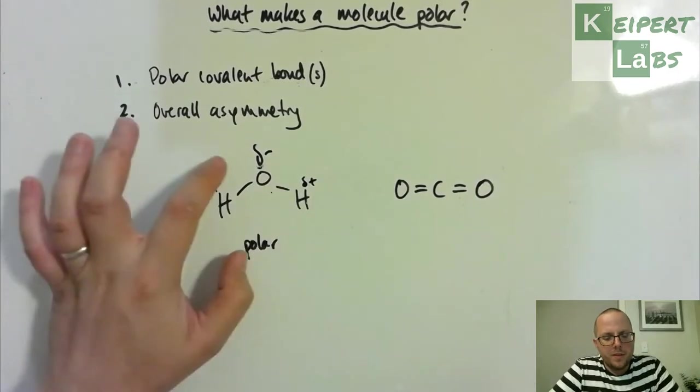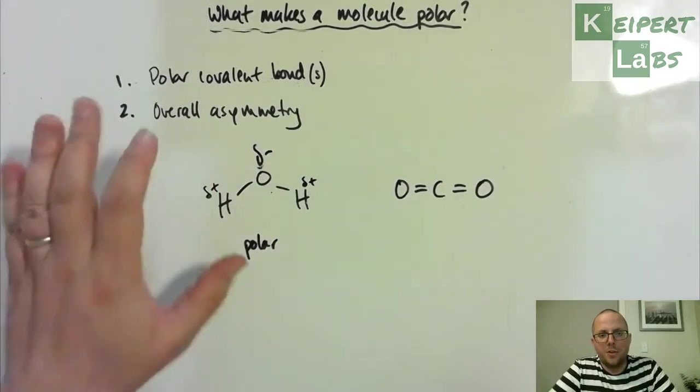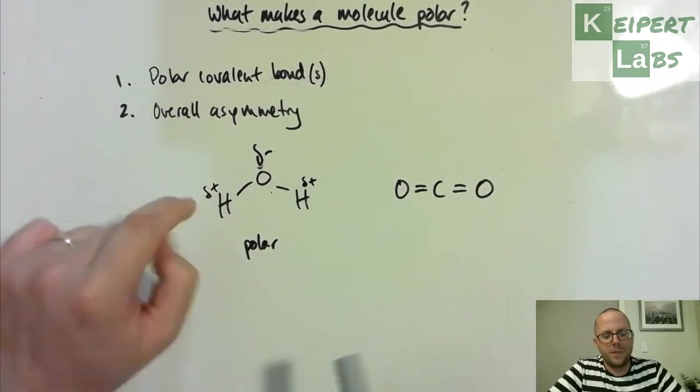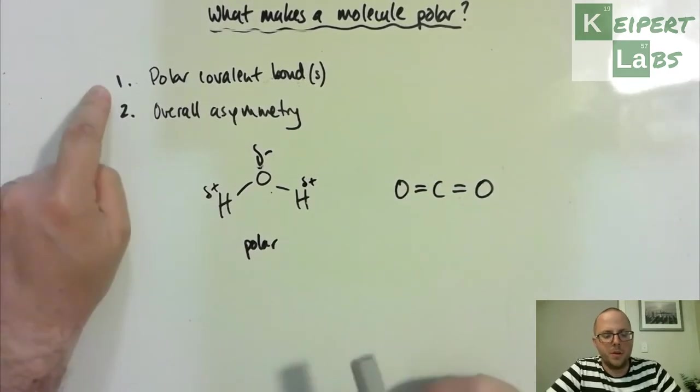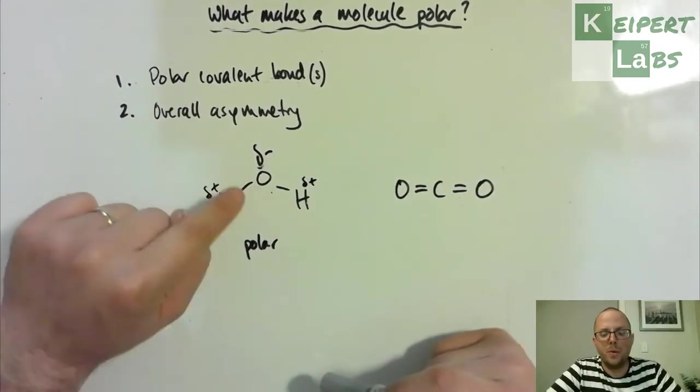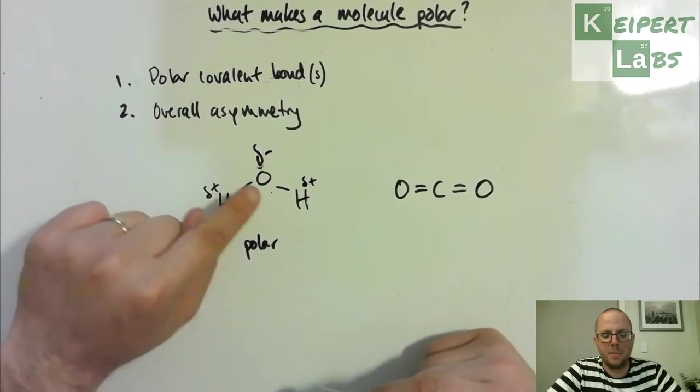When we're looking at our two criteria, it ticks the first box, because we have not one, but two polar covalent bonds that exist in this molecule.